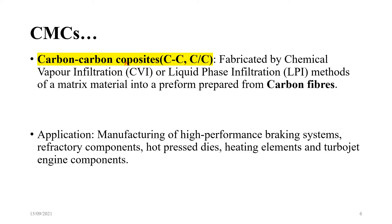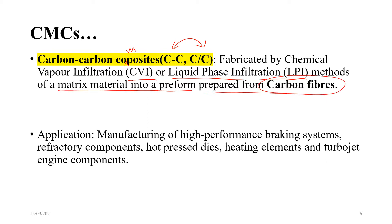Carbon-carbon composites — typically denoted by the C/C notation — are fabricated by chemical vapor infiltration or liquid phase infiltration of a matrix material into a preform prepared from carbon fibers, so the carbon fiber itself becomes the precursor of the carbon-carbon composite. Applications include high-performance braking systems, refractory components, hot pressed dies, heating elements, and turbojet components.